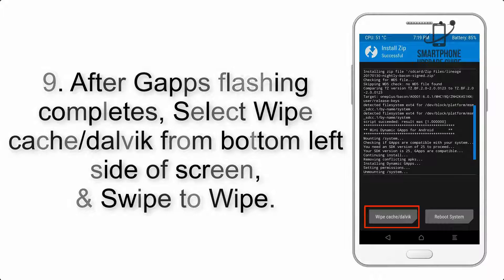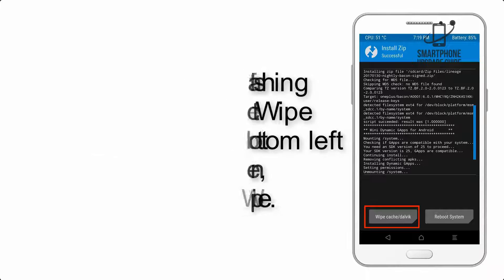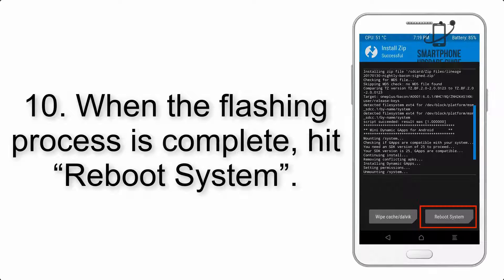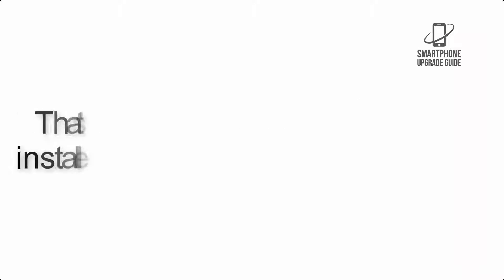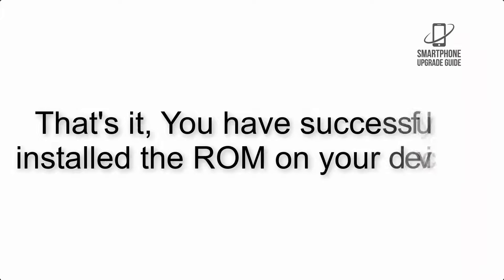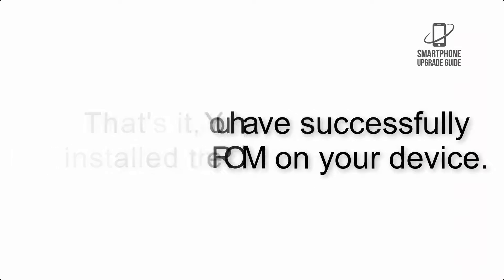Step 9: after GApps flashing completes, select Wipe Cache and Dalvik from the bottom left side of the screen and swipe to wipe. Step 10: when the flashing process is complete, hit Reboot System. That's it — you have successfully installed the ROM on your device.